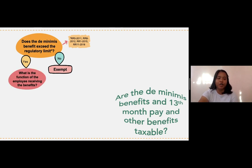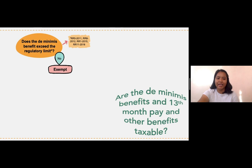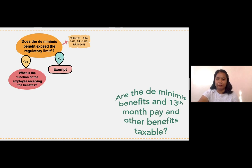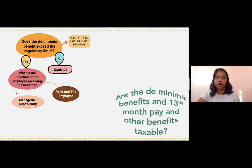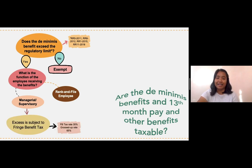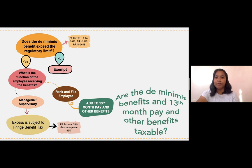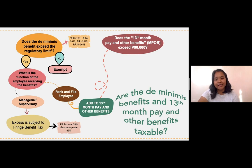However, if the answer is yes — the benefit exceeds the regulatory limit — you have to answer the next question: what is the function of the employee receiving the benefits? There are two possible answers: managerial or supervisory, or rank and file employee. If the answer is managerial or supervisory, the excess from the de minimis benefits will be subjected to fringe benefit tax. But if the answer is rank and file employee, the excess will be added to the 13th-month pay and other benefits.